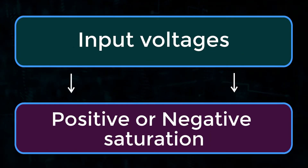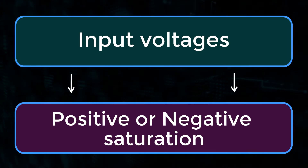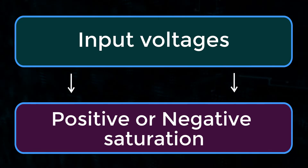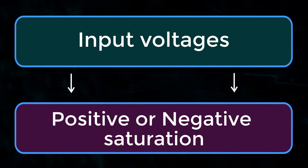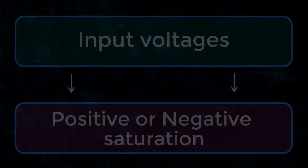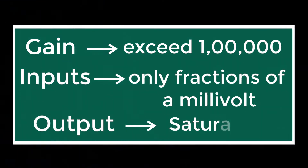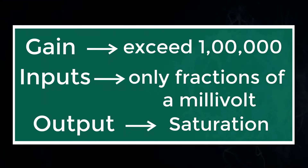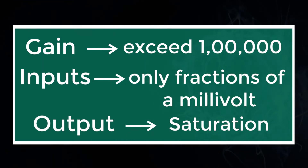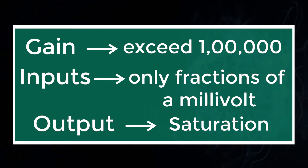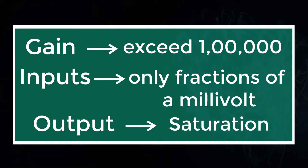In operation, the op-amp goes into positive or negative saturation depending upon the input voltages. As the gain of the operational amplifier will generally exceed one lakh, the input will run into saturation when the inputs are only a fraction of a millivolt apart.